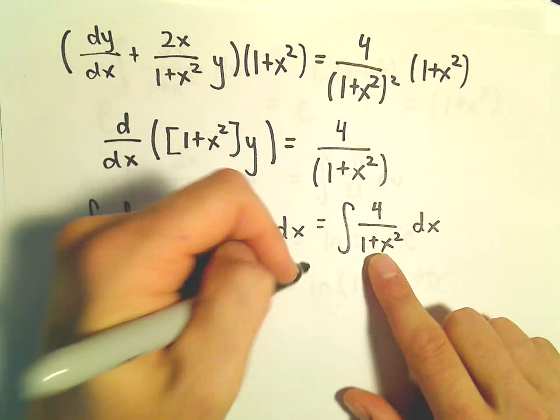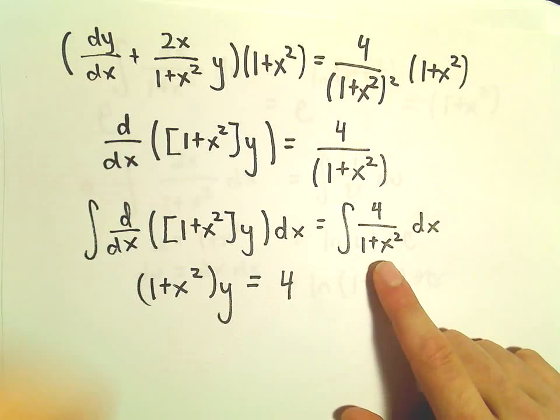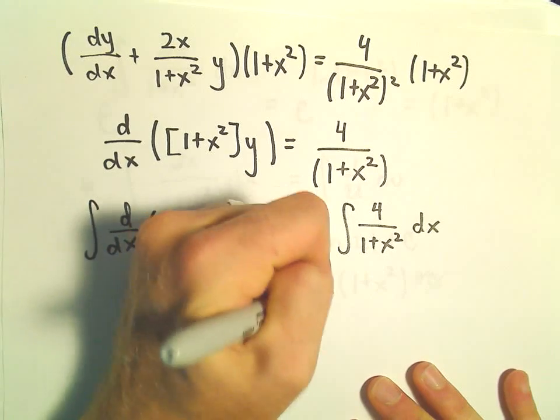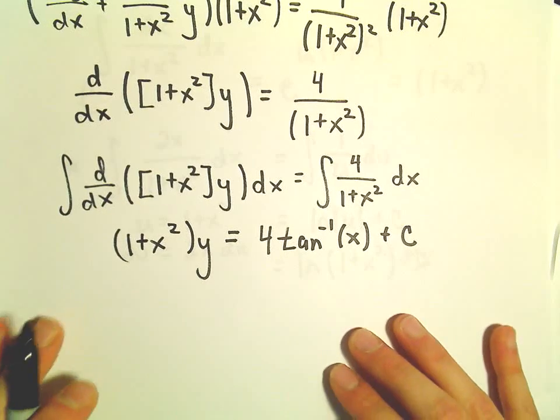On the right side, well, the antiderivative of, so I've pulled the 4 out, the antiderivative of 1 over 1 plus x squared. That's just going to be arctangent of x. I'm going to add on the plus c.